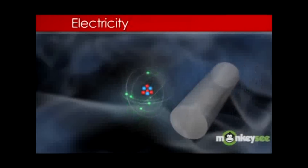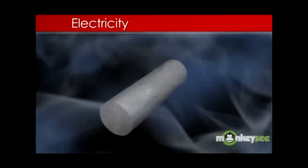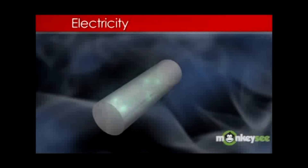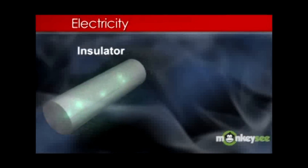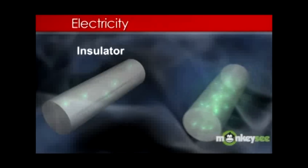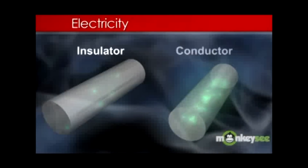If a material holds onto its electrons tightly, it is known as an insulator. If its electrons are more loosely bound, it's called a conductor.